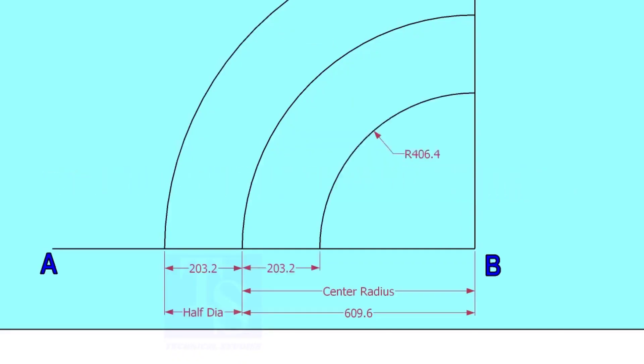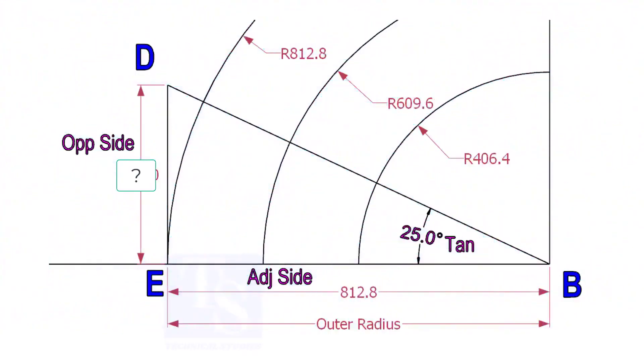Mark the half OD arcs on both sides of the center line. Mark a line 25-degree rotated from the base line AB.